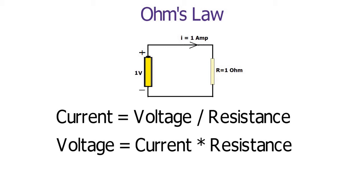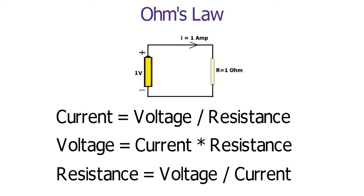Resistance equals voltage divided by current. 1 ohm is the resistance that allows 1 ampere of current when 1 volt is applied across it.